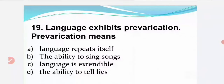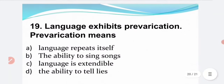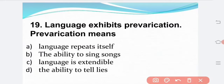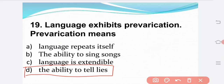Language exhibits prevarication. Here prevarication means: Option A — language repeats itself. Option B — the ability to sing songs. Option C — language is extendable. Option D — the ability to tell lies. The correct answer is Option D: the ability to tell lies.